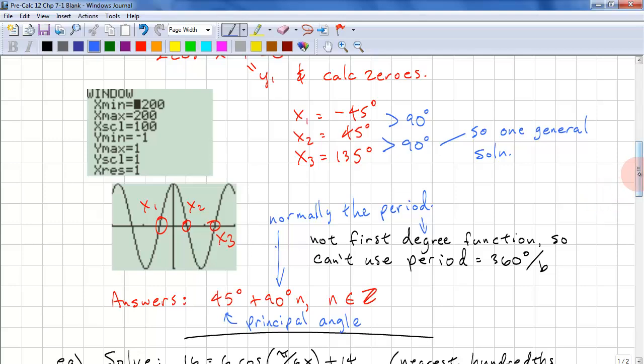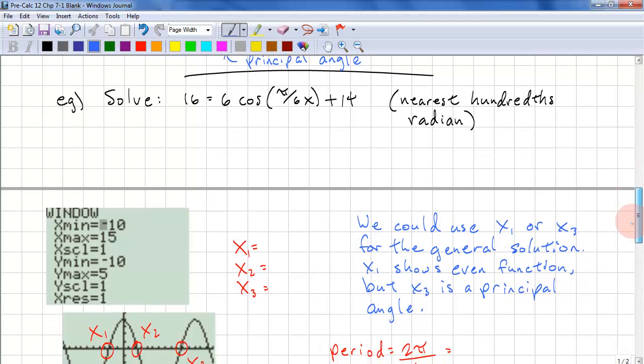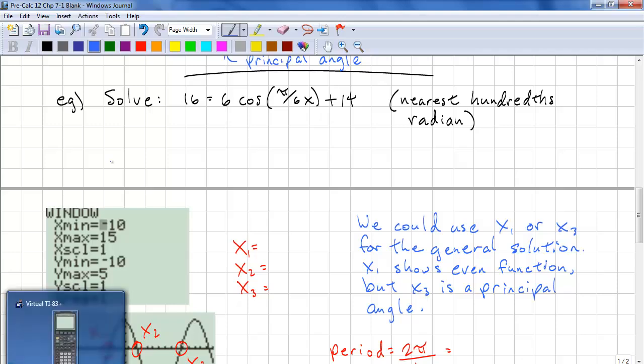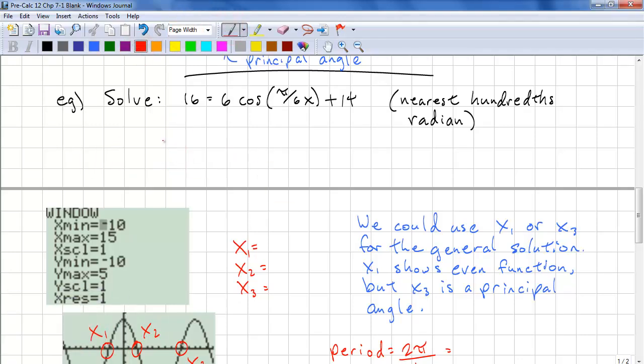It's not the case because of this. Let's look at the next problem. We need to solve 16 equals 6 cos of pi over 6 x plus 14 to the nearest hundredth of a radian. So we need to move everything over to one side. We have 0 equals 6 cos pi over 6 of x minus 2. We set this equal to y1 and calc the zeros.